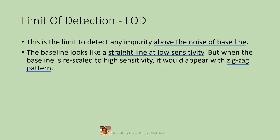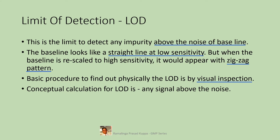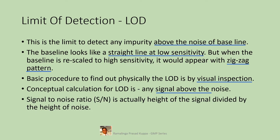This zigzag pattern is due to residual noise generated by the detector. Our aim is to differentiate this noise from the signal due to an impurity. The basic procedure to find LOD physically is by visual inspection. When the zoomed baseline is viewed, any signal above the average noise is considered a signal due to impurity. This can be seen visually, and conceptually this is the basis for determining the LOD.